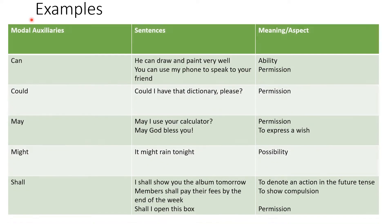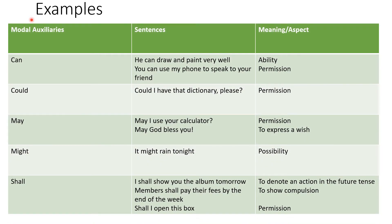Examples of modal auxiliaries in sentences. Look at this table: modal auxiliaries, sentences, and the meaning or aspect that it conveys. The modal auxiliary 'can': the sentence 'He can draw and paint very well' conveys ability. The next sentence, 'You can use my phone to speak to your friend,' conveys permission.